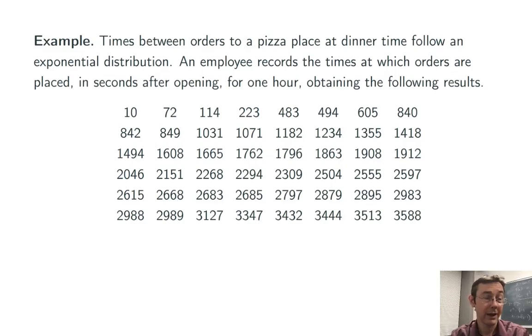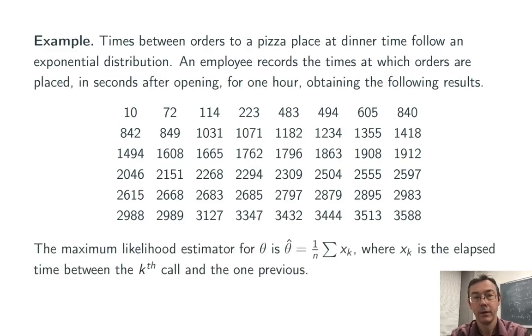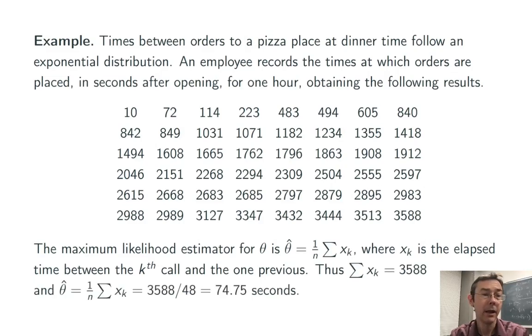So let's try and estimate theta here. We know the maximum likelihood estimator is just the sample mean, 1 over n times the sum of all the waiting times. And in this case, we can actually get the sum of all the waiting times just by looking at the time at which the last observation occurred. So in this case, that's 3588. So for our maximum likelihood estimator here, we get theta hat is 3588 over 48, about 75 seconds.